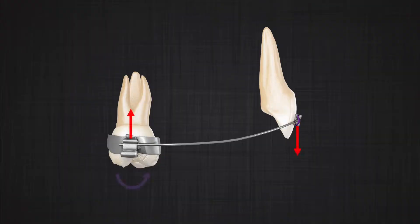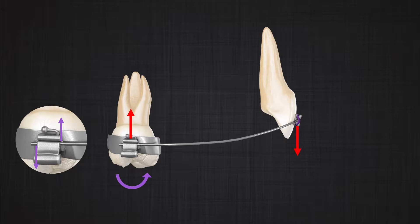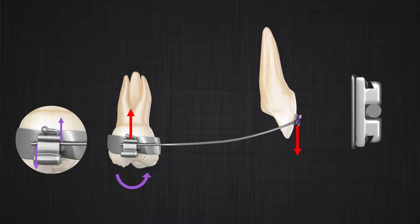If you remember from last time, we talked about application of the round wire in 2x4 setup. In that system, we can produce a couple on the molar, and we said that in the front, production of the couple is not possible. In that sagittal dimension that you are seeing in the picture, the system acts close to the one-couple system.